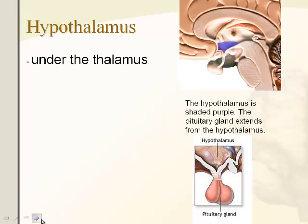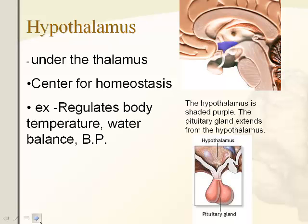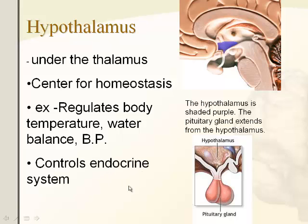The hypothalamus sits under the thalamus. It regulates body temperature, water balance, and blood pressure — as we've seen in the excretion and reproduction units where homeostasis is important. The hypothalamus controls the release of certain hormones and connects to the endocrine system, which we'll touch on a bit in the next unit.